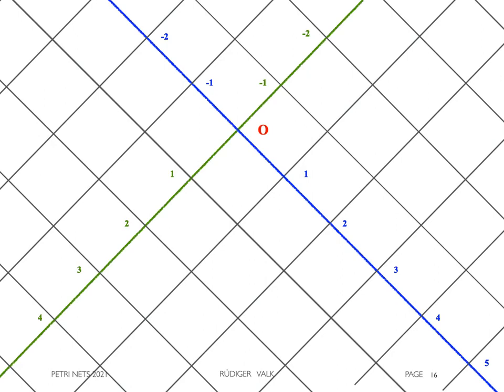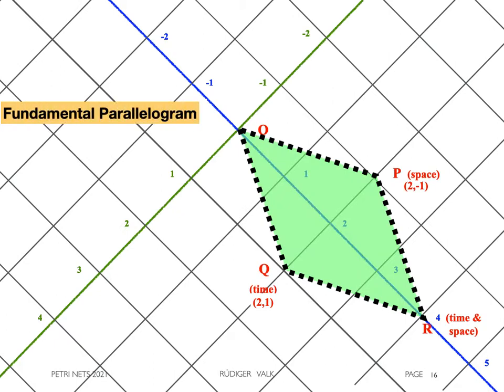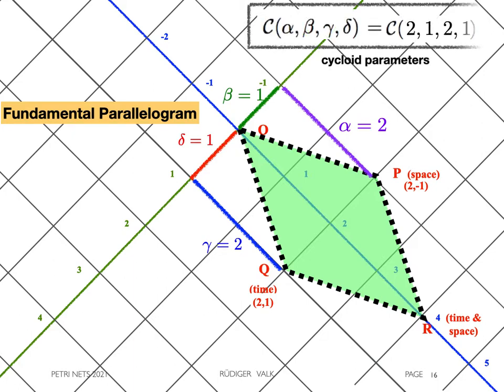In the fundamental parallelogram, we see the vertices O, P, Q and R. They are defined by parameters alpha and beta equal 2 and 1, as well as gamma and delta. All together, we have the cycloid 2, 1, 2, 1.